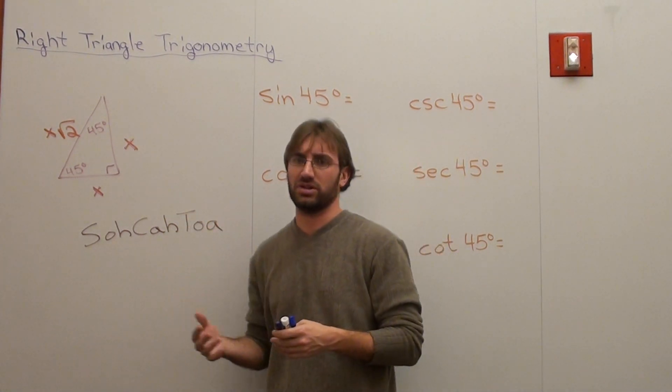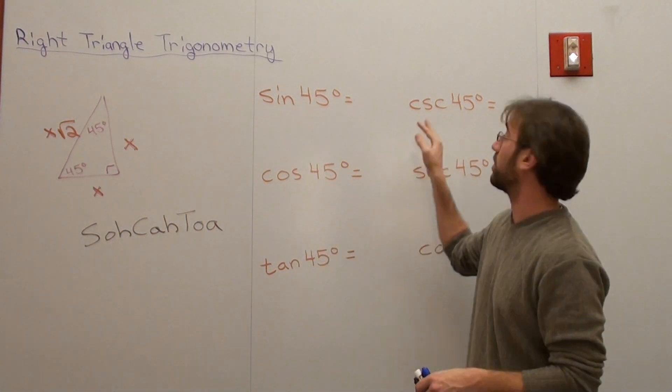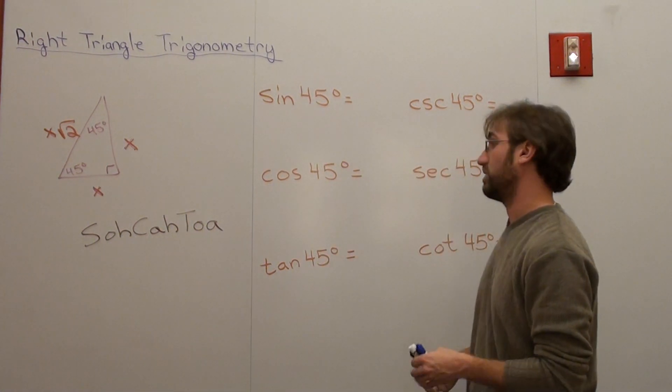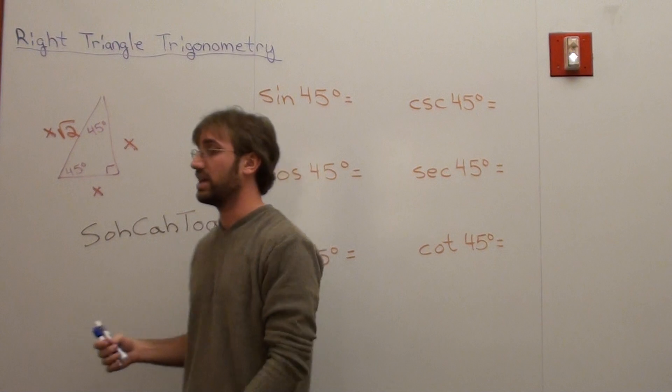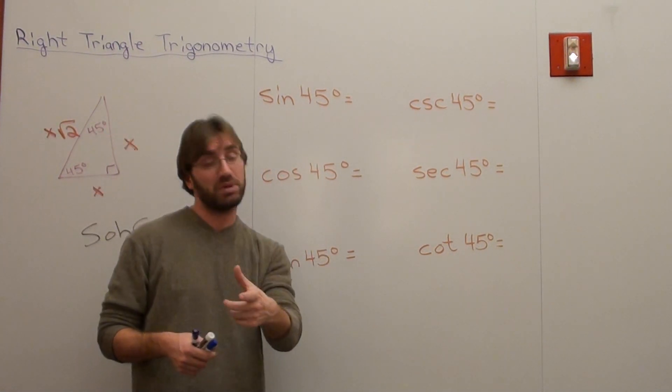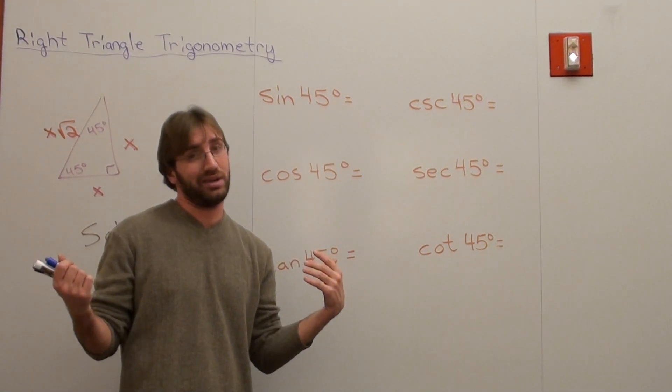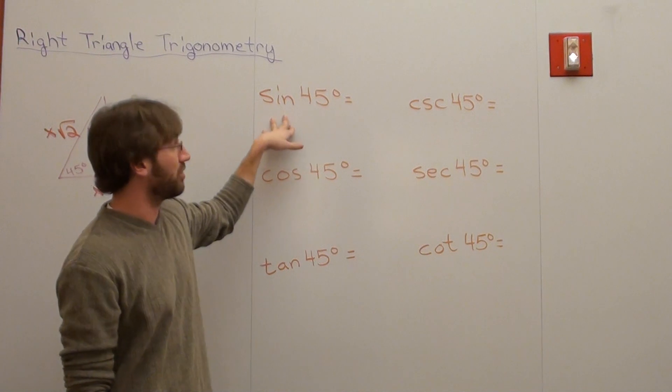So I want to figure out all the functions, or sorry, all the values of the functions. So I've got sine of 45, cosine of 45, tangent of 45, cosecant, secant, and cotangent. And basically what I'm trying to say is memorize the sine, cosine, and tangent, but if you have a good grasp of co-functions and a good grasp of reciprocals, not so bad at all.